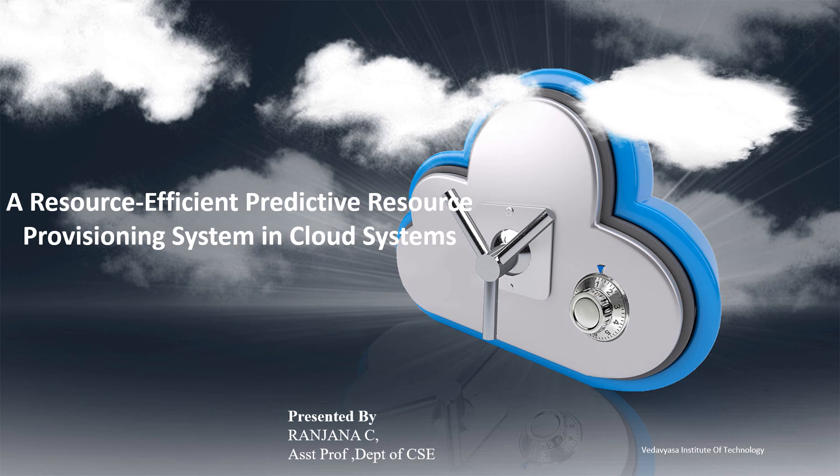As we know, cloud computing is the delivery of computing resources including storage, processing, power, database, networking, analytics and some software applications. Cloud efficiency means making the best possible use of cloud resources at minimum cost. There are some schemes for achieving resource efficiency, but here I am going to tell about a type of algorithm called RPRP.